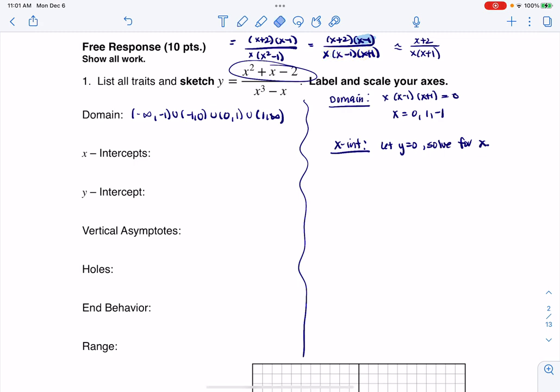What you want to do is you want to use the simplified version and set that numerator to 0. Because if you use the original, you've got to take into account that yes, 1 or x equaling 1 technically 0s out the numerator, but it also 0s out the denominator at the same time, and that winds up being a hole. So it's a matter of we just have to keep track of where everything 0s out. Is it just the numerator? Then it's an x-intercept. If it's just the denominator, it's a vertical asymptote. And if it's both, it's a hole.